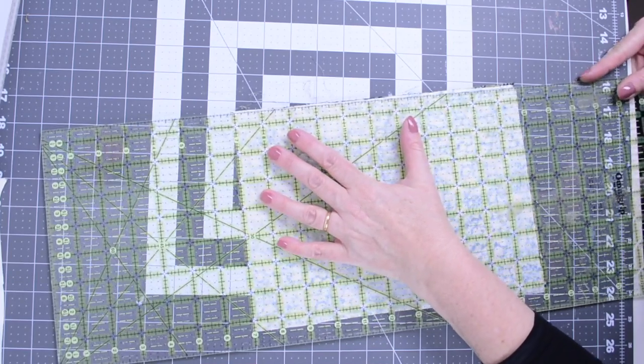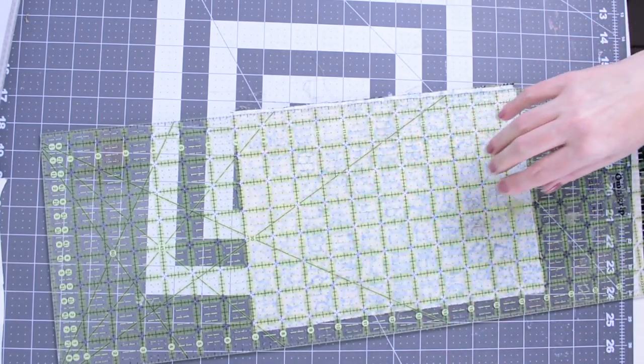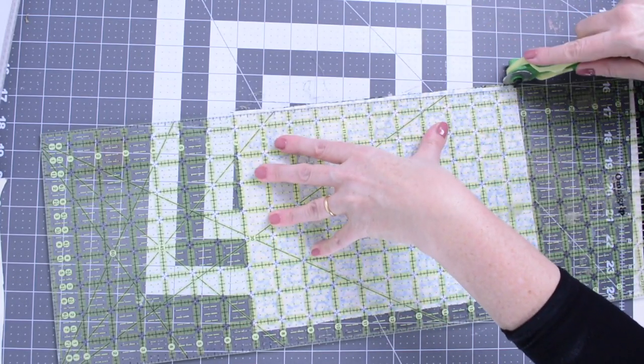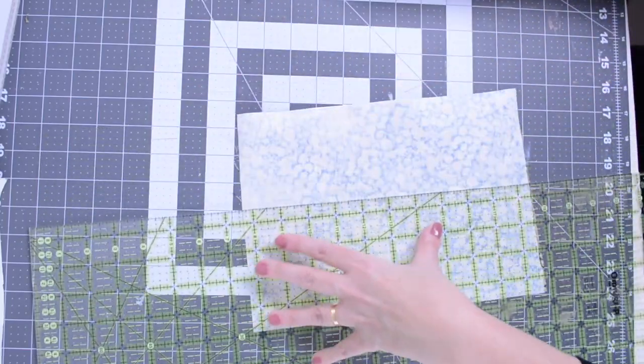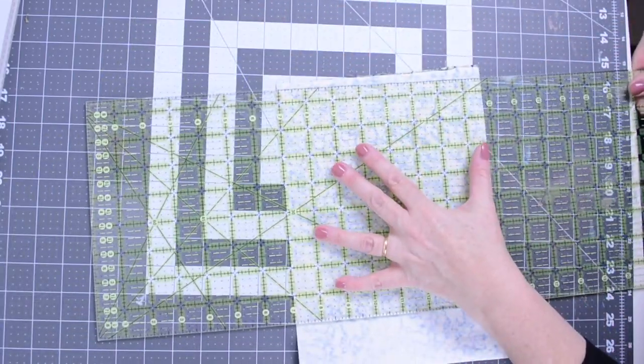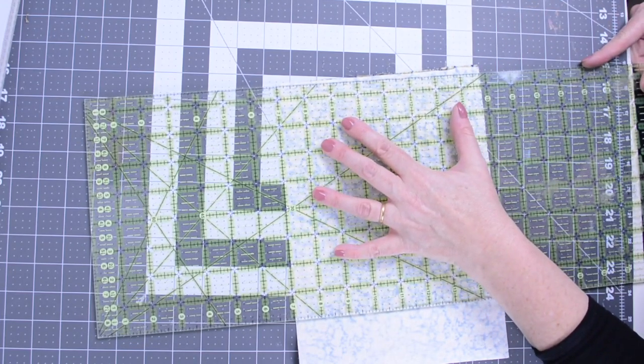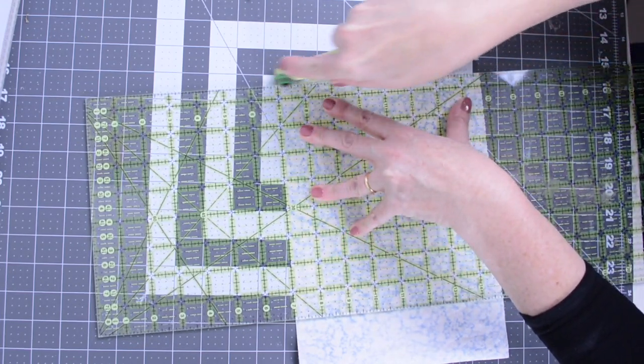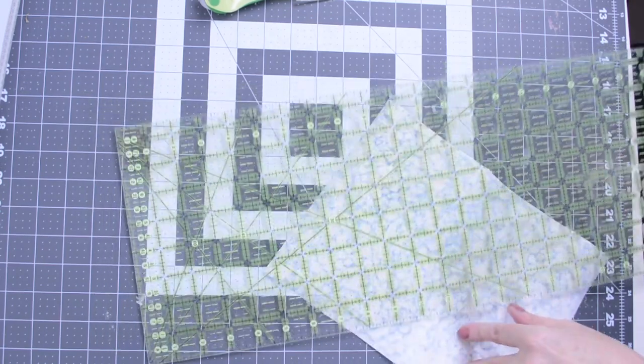Then using scissors or a quilting ruler and a rotary cutter, just trim away the frayed edges and square everything up so it's ready for you to cover your book board with.